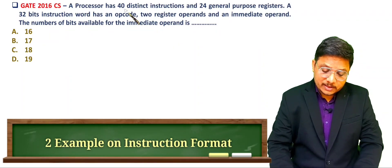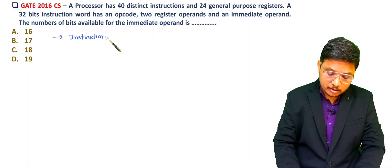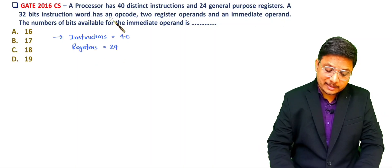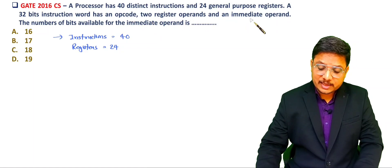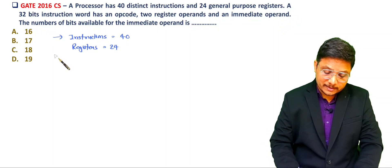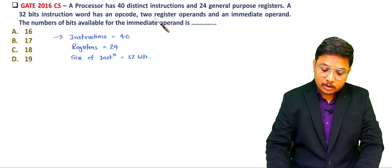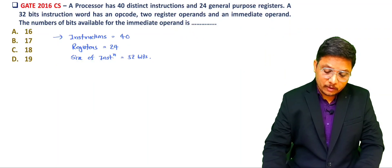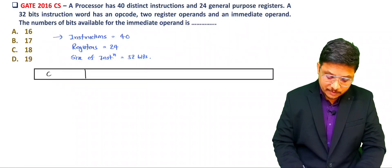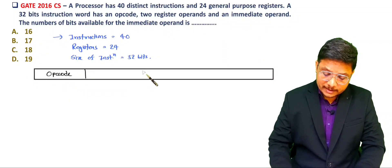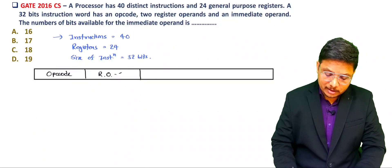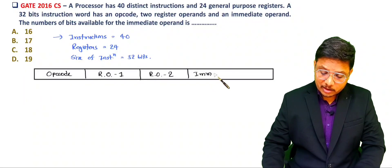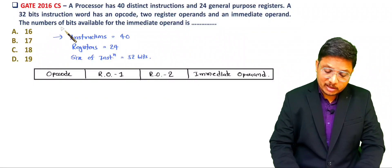Let us look at the second question. A processor has 40 different instructions and 24 general purpose registers. A 32-bit instruction word has an opcode, 2 register operands, and an immediate operand. The size of the instruction is 32 bits. We need to find the number of bits available for the immediate operand. Let me draw the instruction format: opcode, register operand 1, register operand 2, and the immediate operand field.